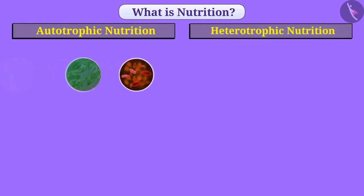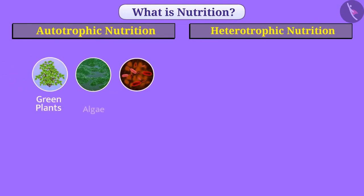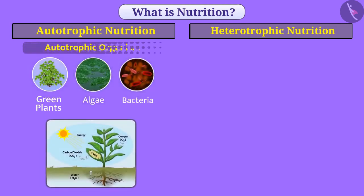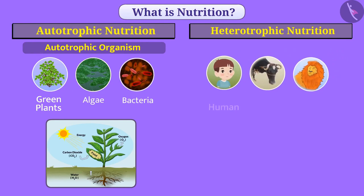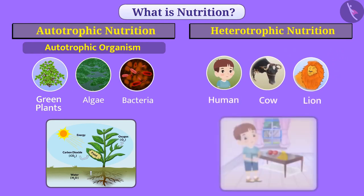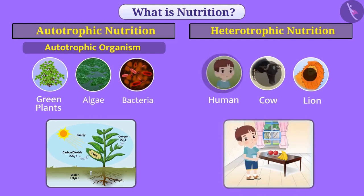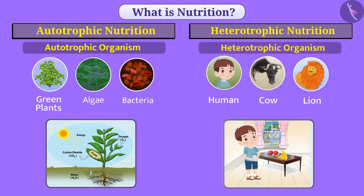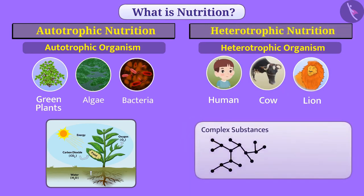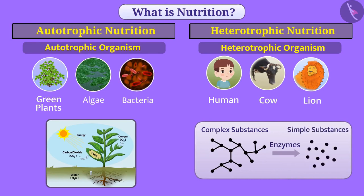In nature, there are many organisms such as green plants, algae and some bacteria that make their own food. These are called autotrophic organisms and their mode of nutrition is called autotrophic nutrition. Other organisms such as humans, cows and lions depend on other organisms for their food. These are called heterotrophic organisms and their mode of nutrition is called heterotrophic nutrition.